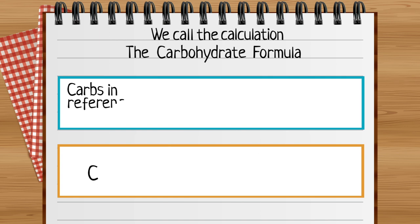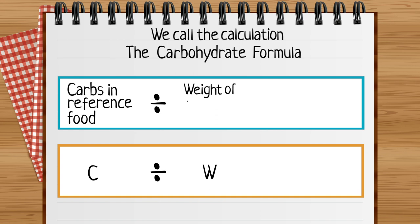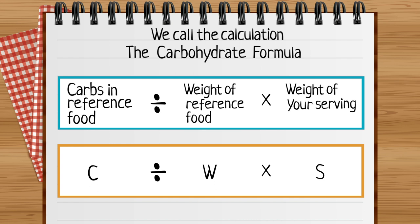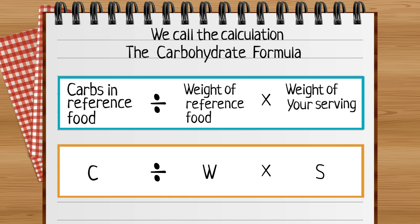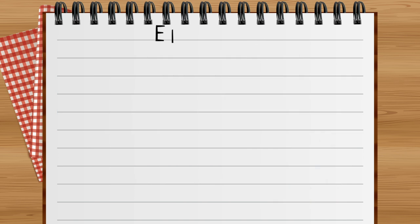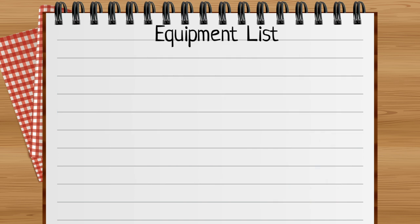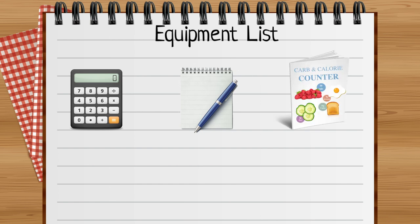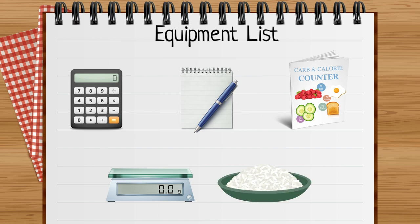C stands for carbohydrate in the reference food, W stands for weight of the reference food, and S stands for the weight of my own serving. In this calculation we need two pieces of information from a carbohydrate reference. To do the calculation you will need a calculator, a notepad and pen, the Carbs and Cals book, a set of digital scales, and the food you're going to eat.